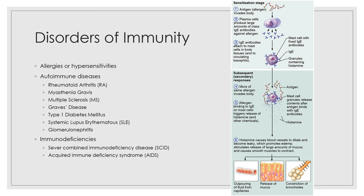Immunodeficiencies include both congenital and acquired conditions in which the production or function of immune cells or complement is abnormal. The most devastating congenital condition is severe combined immunodeficiency disease (SCID), in which there is a marked deficit of both B and T cells. Because T cells are absolutely required for normal operation of both arms of the adaptive response, afflicted children have essentially no protection against pathogens. Minor infections easily shrugged off by most children are lethal to those with SCID. Bone marrow transplants and umbilical cord blood providing normal lymphocyte stem cells have helped some SCID patients; without such treatment, survival requires living in protective isolation. The most important and devastating acquired immunodeficiency is AIDS, which cripples the immune system by interfering with the activity of helper T cells.